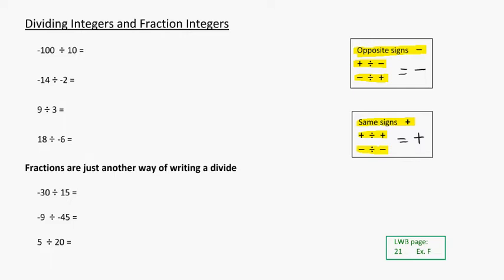So let us take a look at these examples. First thing I might do is actually look at the sign. So that's a negative number divided by a positive number. Those are opposite signs, so I'm going to say that it's going to be a negative number. Now I'll think about 100 divided by 10, which will be 10.